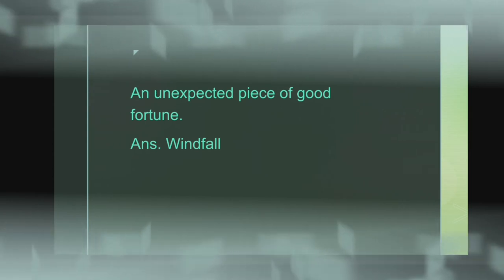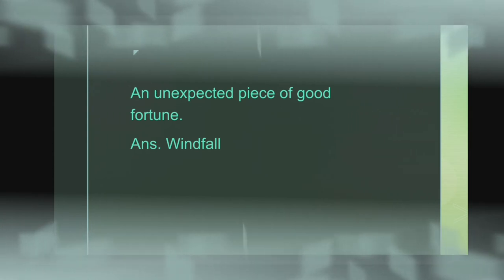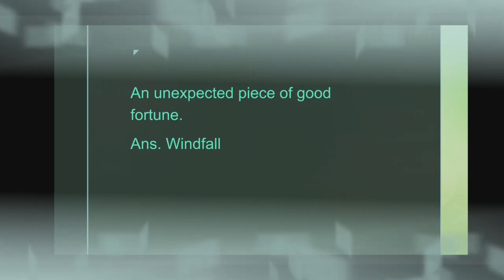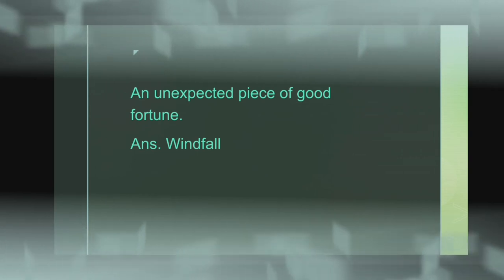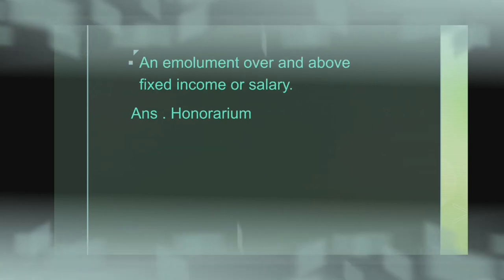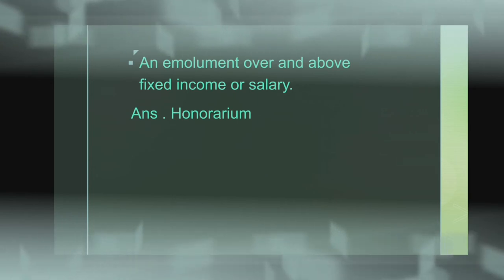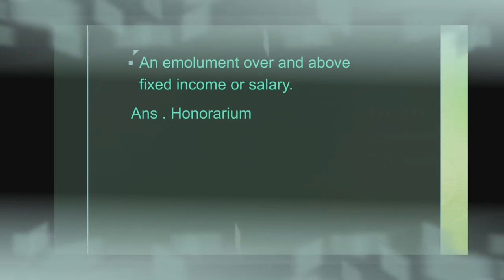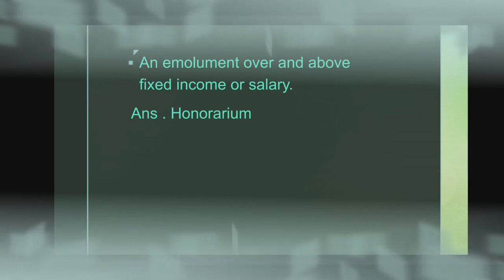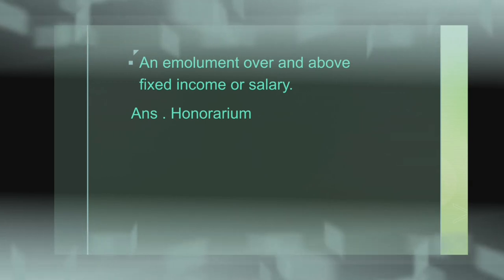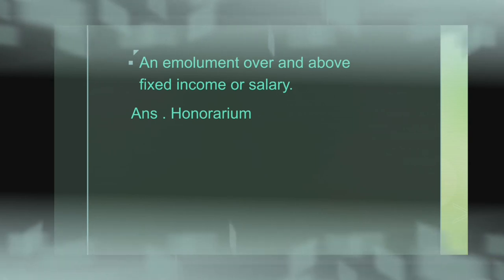An unexpected piece of good fortune — this means something really good that happens to you. Next: emolument over and above fixed income and salary. A fixed income comes from salary, and we can also get some income from part-time work, such as from a society secretary, treasurer, or NGO.